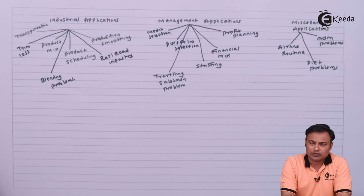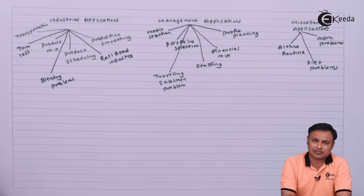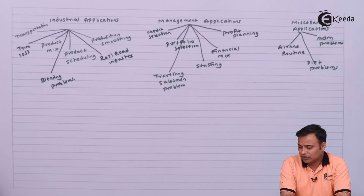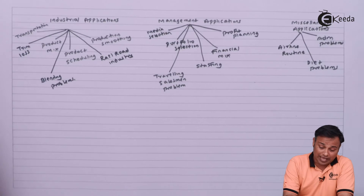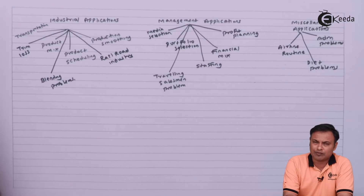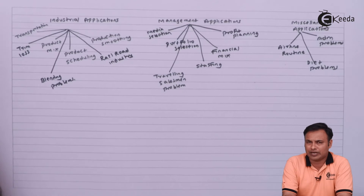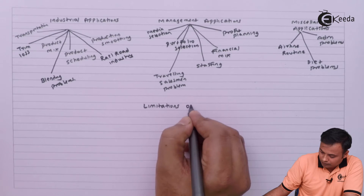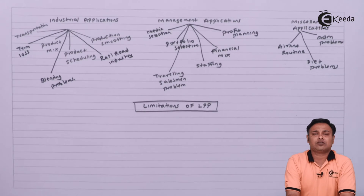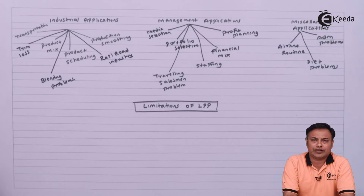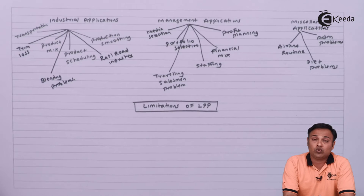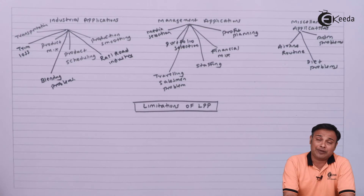Last but not least we have miscellaneous applications like solving scheduling problems for airlines or diet mix problems, where LPP is used to minimize time, distance, or cost. Now we talked about the basics of LPP and its applications. Let's now talk about the limitations of LPP. The first limitation is that you can't use LPP for the most complicated problems where there are multiple variables involved.